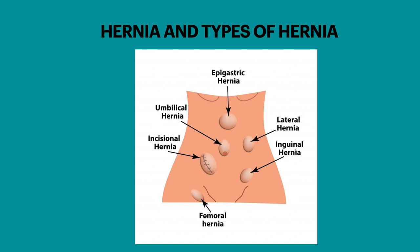Hernia can occur in other areas of the body also. Types of hernia: Inguinal hernia — a portion of the intestine pushes through the inguinal canal, which is the weak spot. Femoral hernia occurs in the part of the groin where the femoral vein and artery pass from the lower abdomen to the thigh.